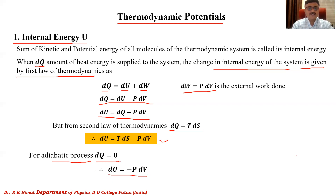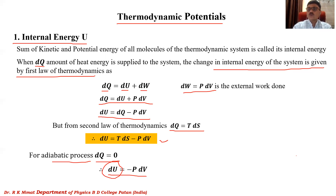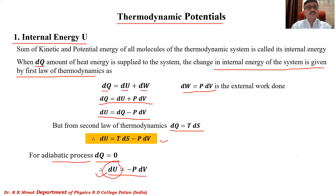One important point: the change in internal energy only depends upon the initial and final state of the thermodynamic system. It does not depend upon the path followed. Therefore dU is a perfect differential, also called an exact differential. This will be discussed further in Maxwell's thermodynamic relations. So this is the first thermodynamic potential — internal energy — which is a function of entropy and volume.